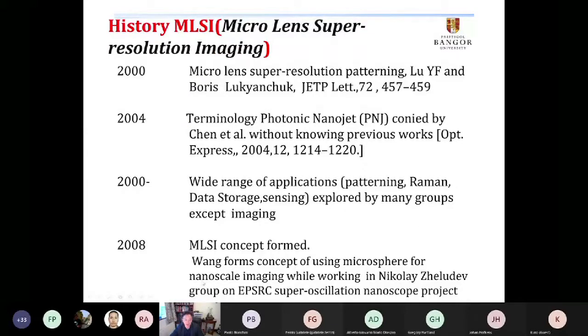How did things come to nanoimaging? This table shows the brief history. Around 2000, the Singapore group, when doing laser cleaning projects, found nanoholes after cleaning the sample. They started to calculate this phenomenon and soon realized this is some very small nanoholes focusing beneath particle lenses. In 2004, a USA group coined the terminology 'photonic nanojet' in an Optical Express paper without knowing Singapore's work. The range of applications since 2000 includes patterning, RAM, and data storage. Lots of papers were published.